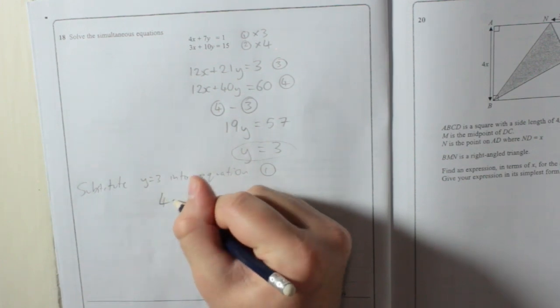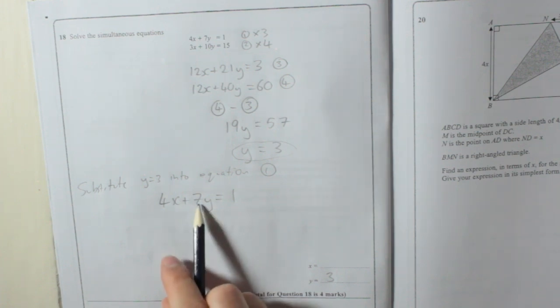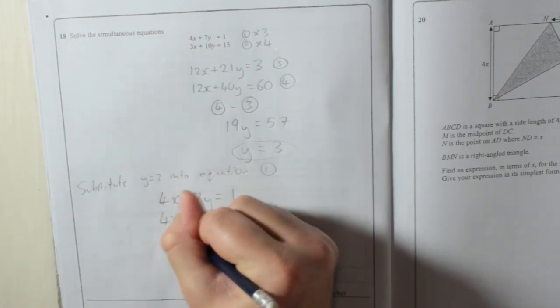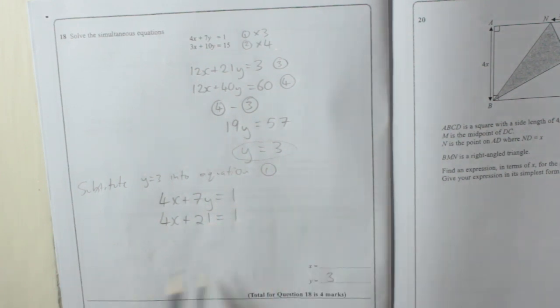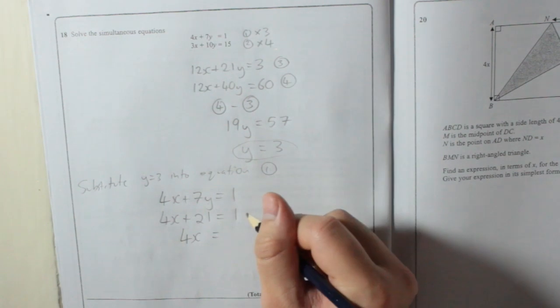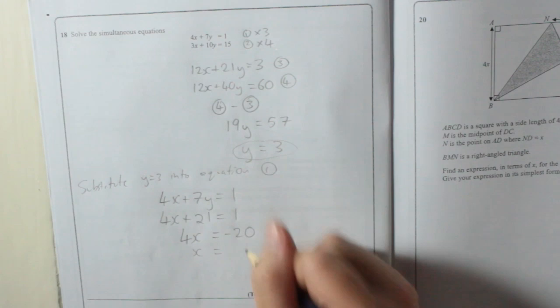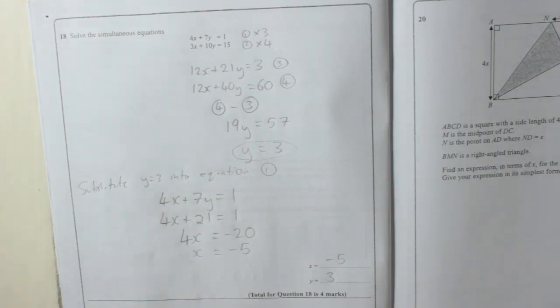So it was 4x plus 7y equals 1. But because we know that y is 3, 7 times 3 is 21. So 4x plus 21 equals 1. Now we've just got an easy equation to solve. Take away 21 from both sides. You end up with 4x equals minus 20. So x equals minus 20 divided by 4, which is minus 5. Therefore, x equals minus 5 and y equals 3.